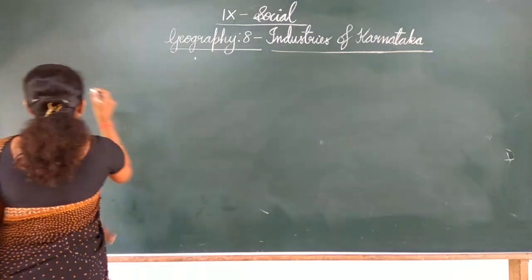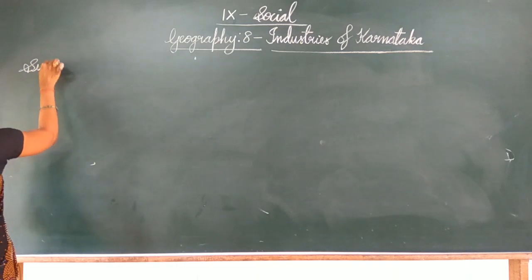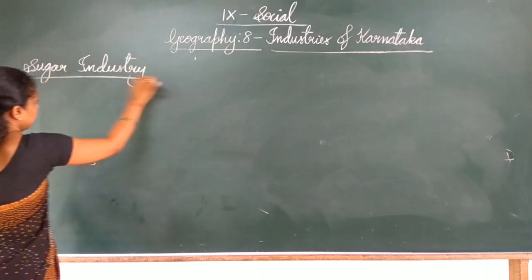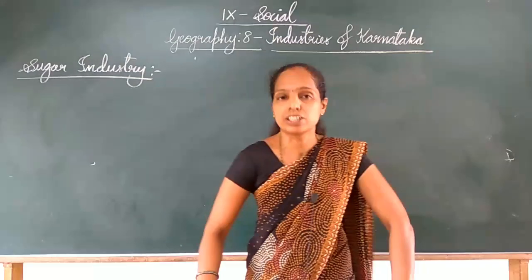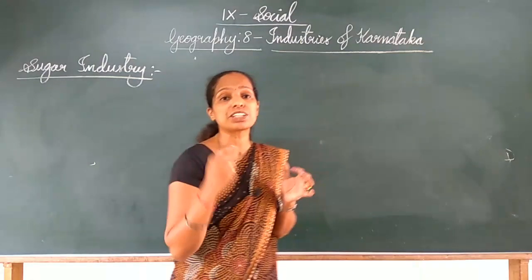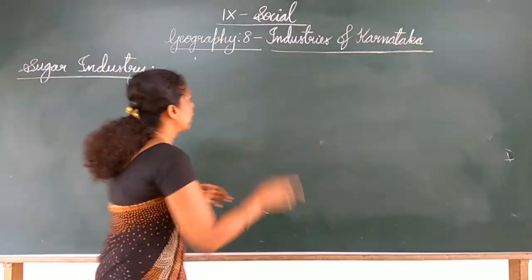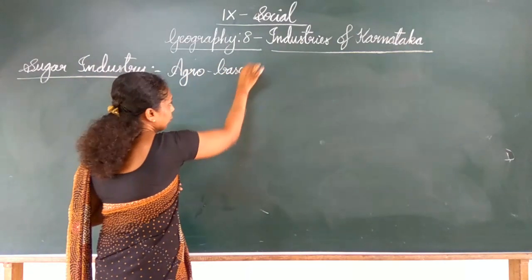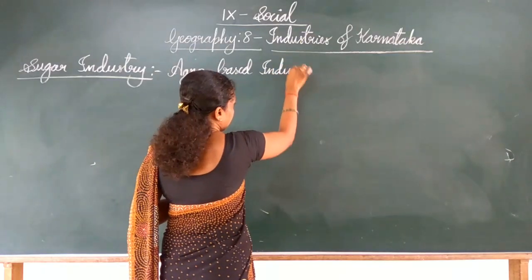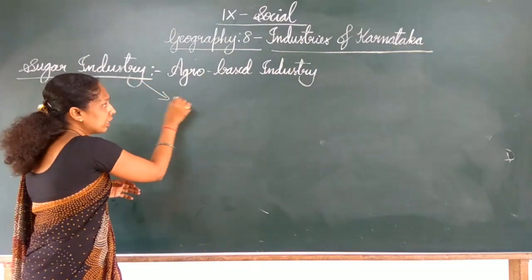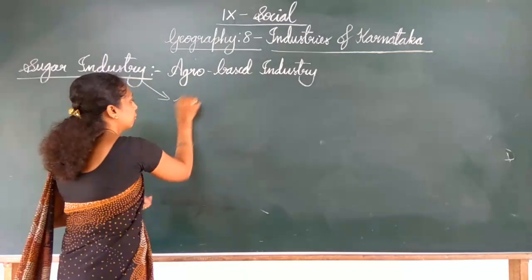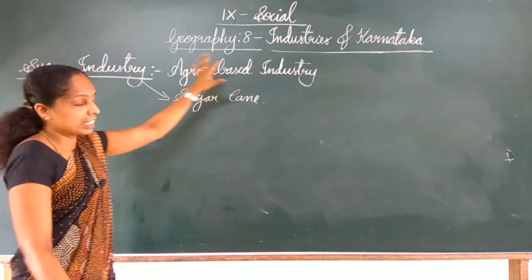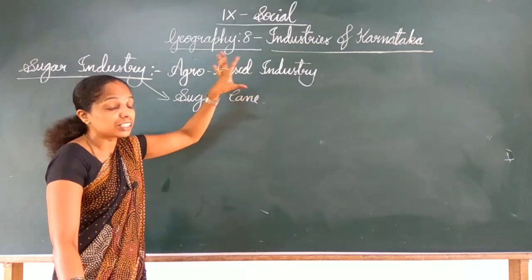First let's go for the sugar industry. You are already familiar with this word. So what type of industry is this? It is an agro-based industry, meaning agriculture-based industry. The raw material used here is sugarcane — it is a crop grown in an agricultural field, so sugarcane is used as the raw material here.